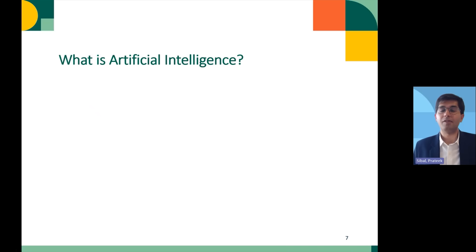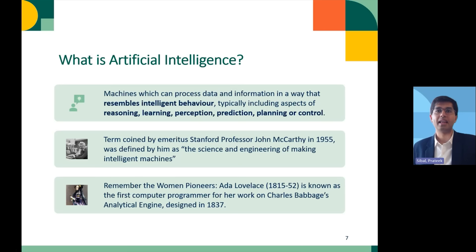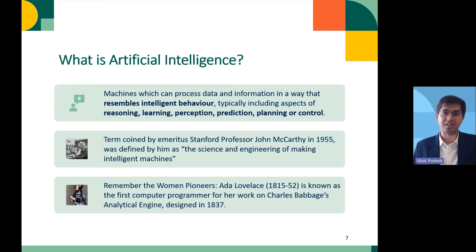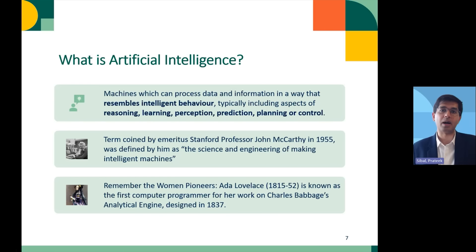To summarize, artificial intelligence is really machines that process data and information in a way that resembles intelligent behavior. These machines are capable of reasoning, learning, perceiving the environment, and using all these attributes to predict. Just a fun fact: the term AI was coined in 1955 by Professor John McCarthy, who defined it simply as the science and engineering of making intelligent machines. And often we forget women pioneers in the history of technology — Ada Lovelace, way back in 1837, was the first programmer.